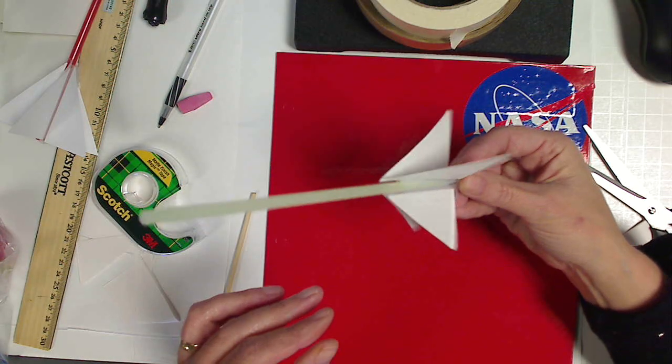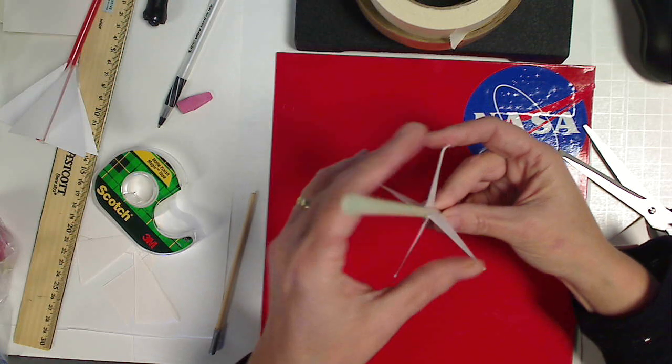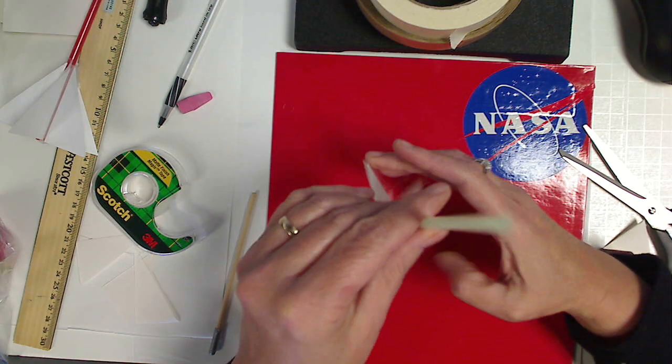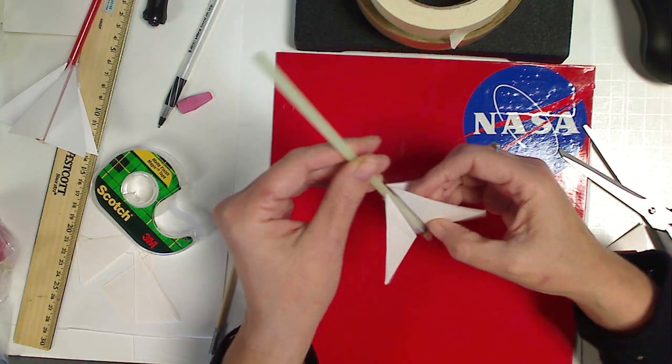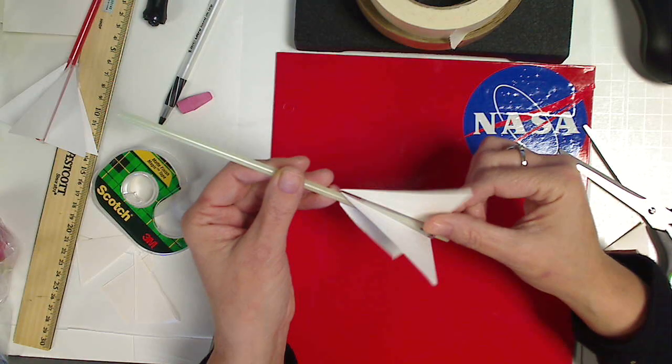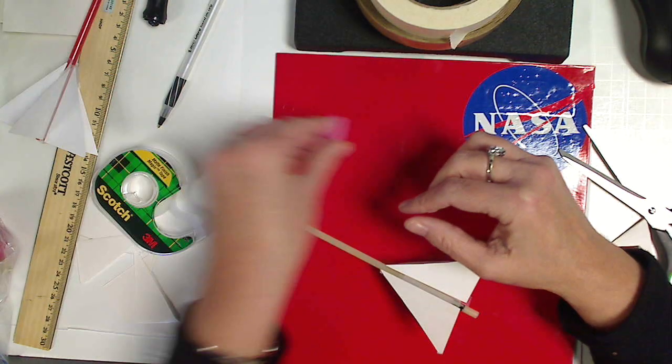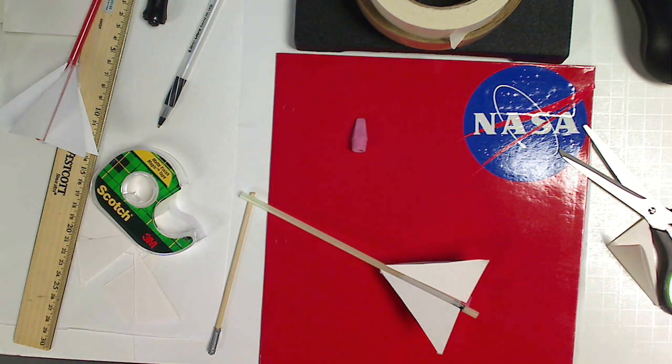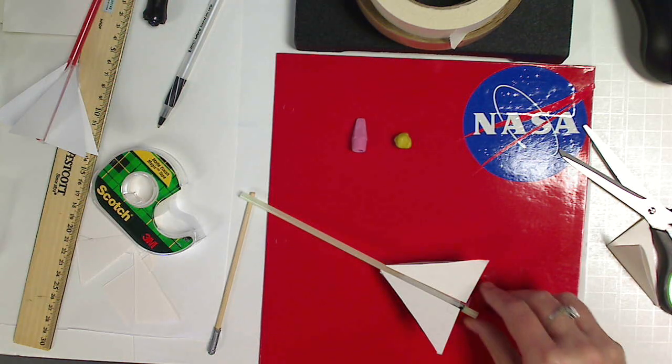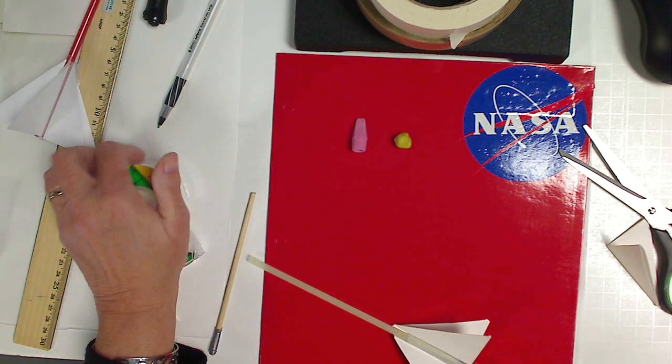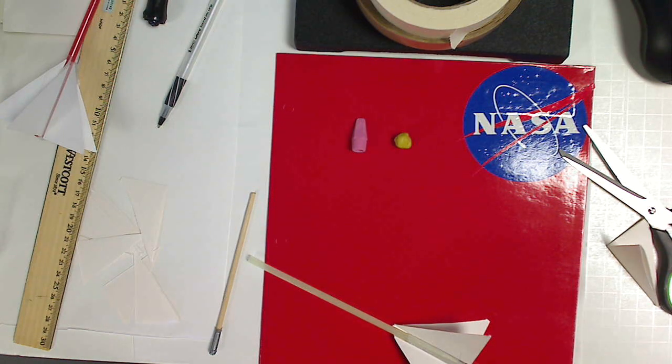So now as you can see, my fins are adhered to my rocket. So I can use, like I said, for the cone, the top of a pencil eraser or a piece of clay. And you don't need a lot of clay, just very little, point of fact.